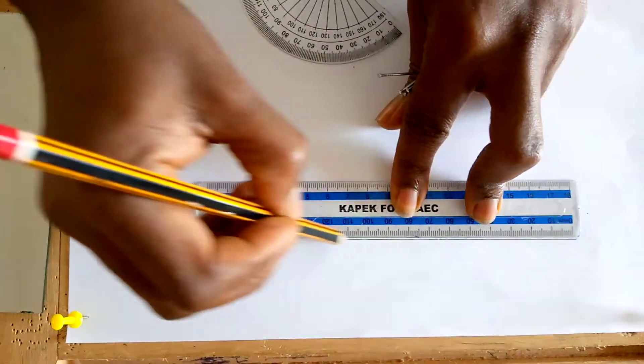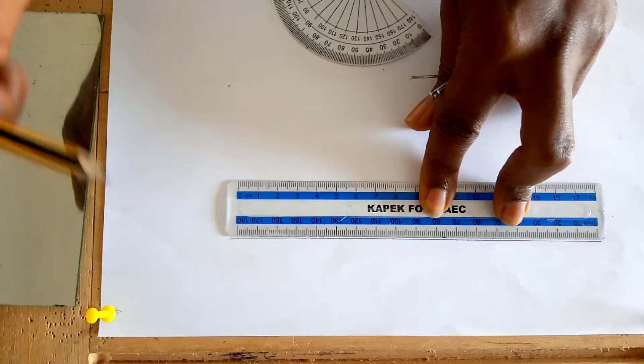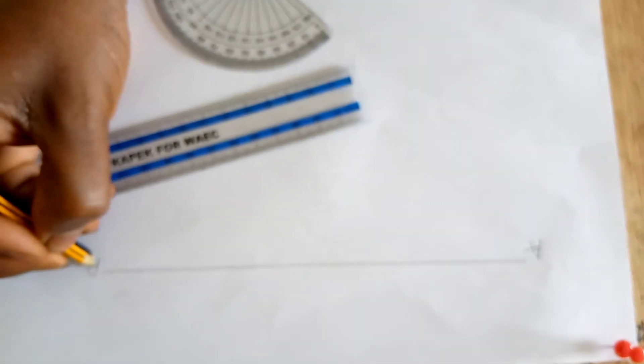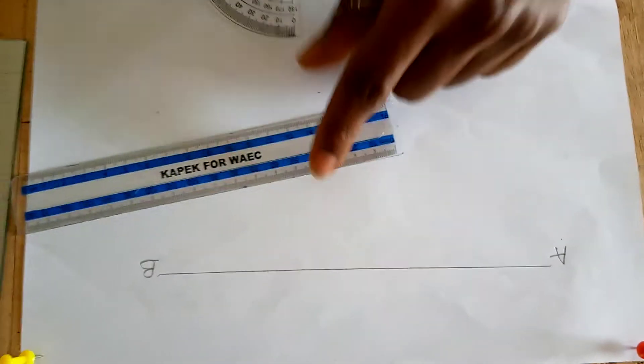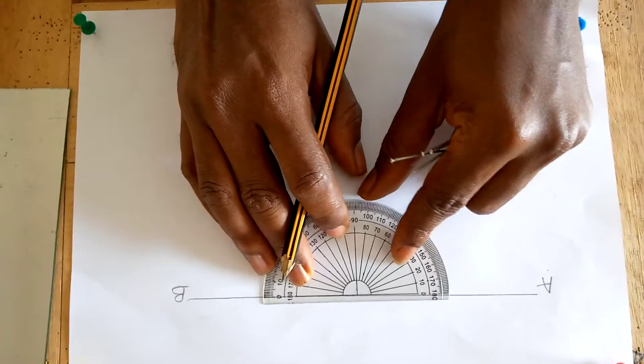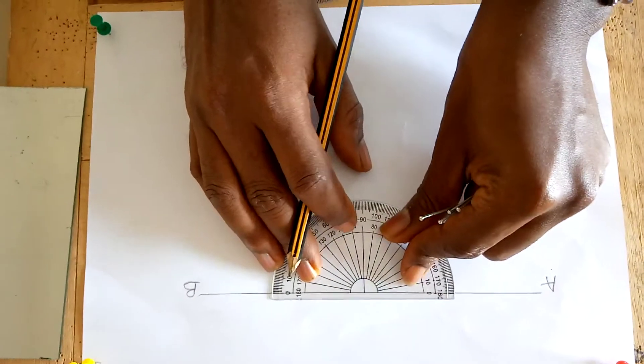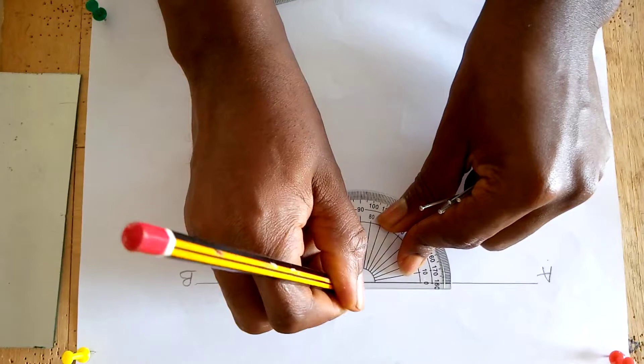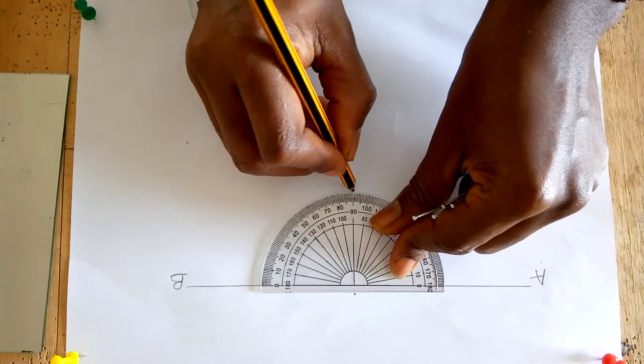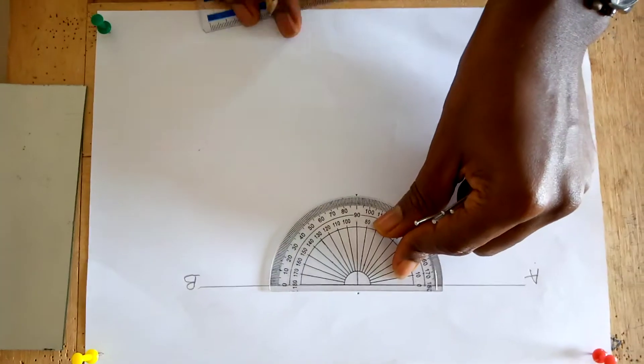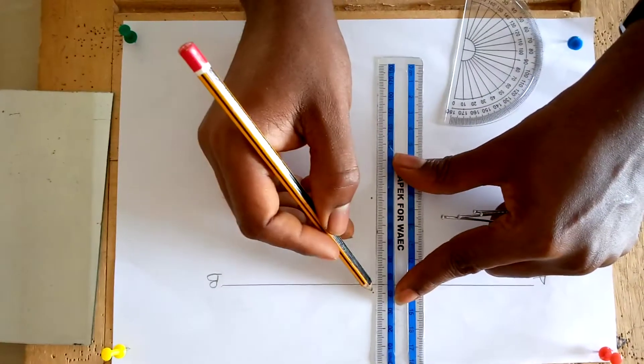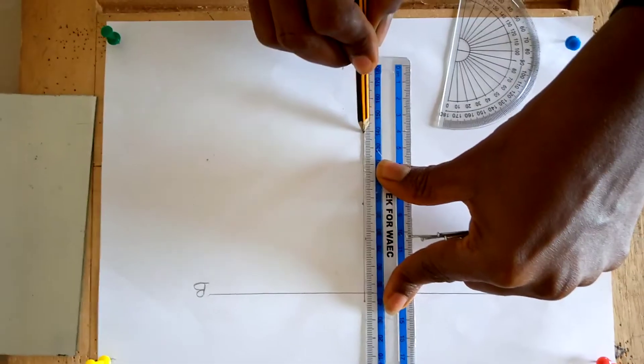With your protractor, draw a perpendicular line which will serve as your normal. Make sure it's on the 90 degrees point so you don't get your line wrong.